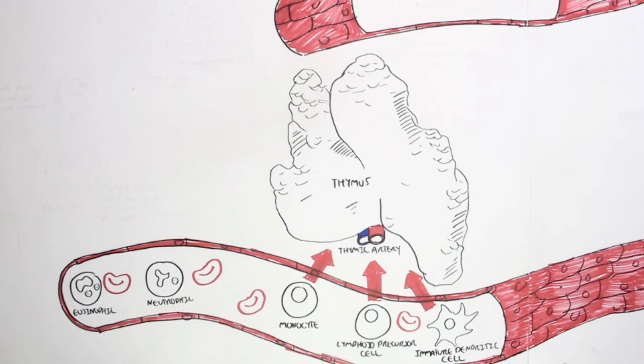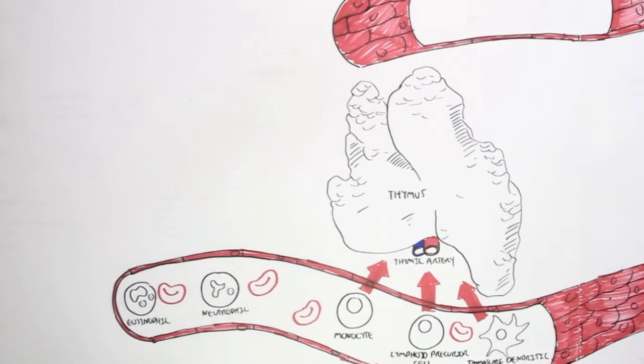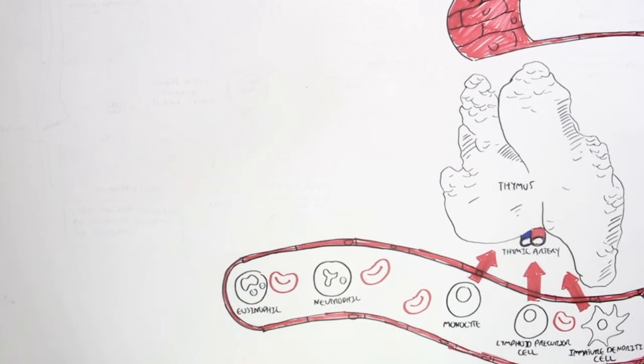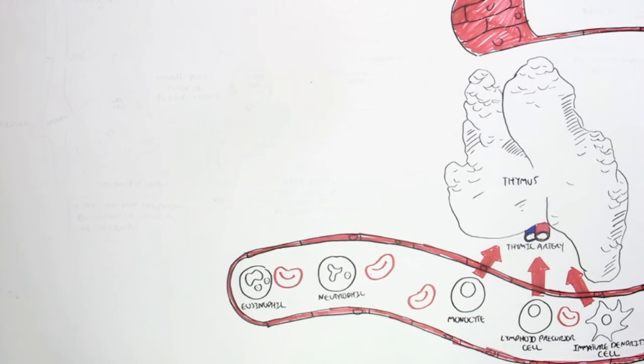And so we finish there. And that concludes this video on the overall immune system. And in the next video, we'll look at the lymphoid precursor cell and how it matures to become two types of T cells, CD4 and CD8.